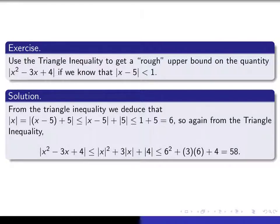Here's my formal proof. I say, from the triangle inequality, we deduce that absolute value of x is equal to, so here you see I've done that trick of adding and subtracting 5. I apply triangle inequality to that. Then I use the fact that this is smaller than 1. I could have put strictly less than if I wanted to. 1 plus 5 is 6. And then I go straight to, so I say so again from the triangle inequality. Then I go to the thing that I'm interested in estimating. I've just applied triangle inequality to that. And now I'm using the fact that absolute x is smaller than 6 to get this, which is 58. And so I conclude that the rough upper bound that I'm looking for is 58.